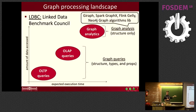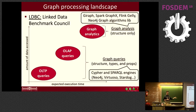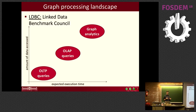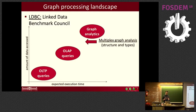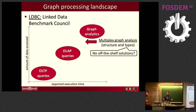The bottom half is also well-covered: graph queries using structure, node types, and properties can use languages like Cypher and SPARQL, with tools like Neo4j, Virtuoso, and Stardog. But our work fits somewhere in between — it uses graph structure and type information but no properties. It sits between all these workloads, and there seem to be no off-the-shelf solutions for these kinds of computations.